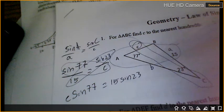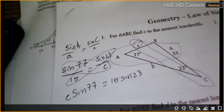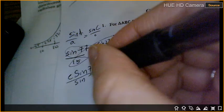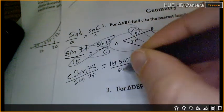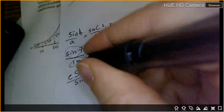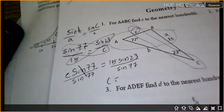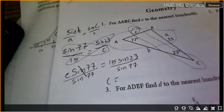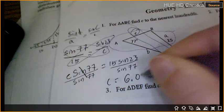Cross multiply. Remember what's on the bottom you put in front. Okay, so we get c sine 77 equals 15 sine 23. Now I'm going to divide by sine 77 on both sides. Okay. And I'm going to put this in my calculator. Six point zero one? Six point zero two. Because it says round to the nearest hundredth. And I'm finished.